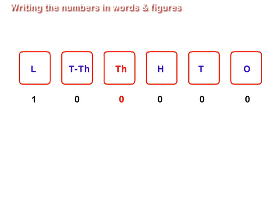The last number has 1 at hundred thousands place, with 0s in all other places. In figures, it is written as 100000, and in words as one hundred thousand.